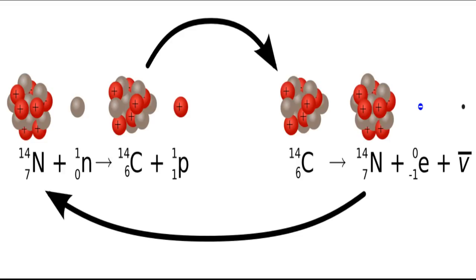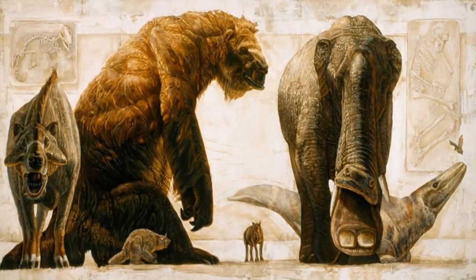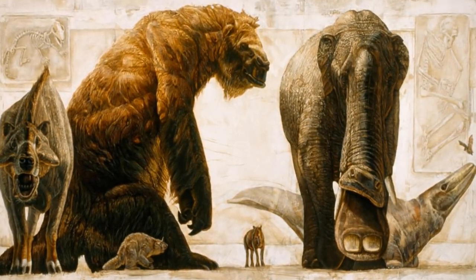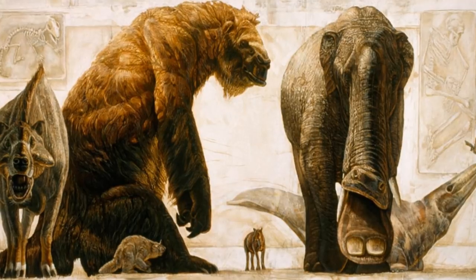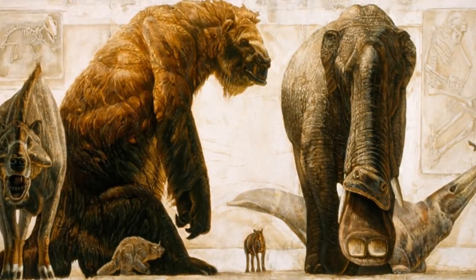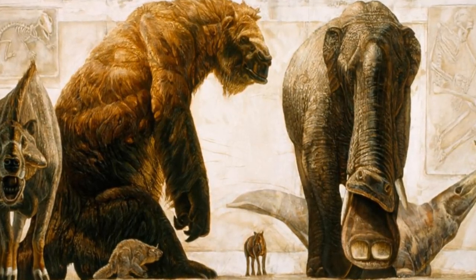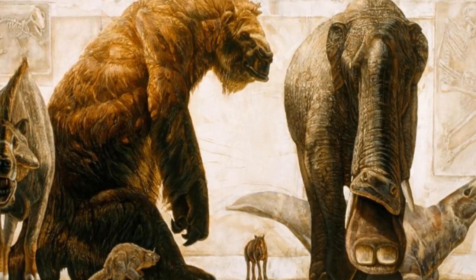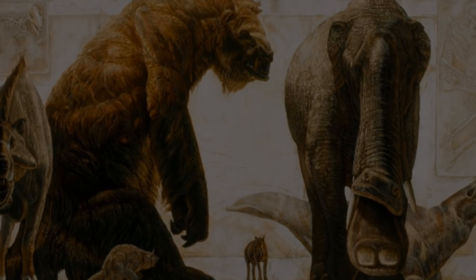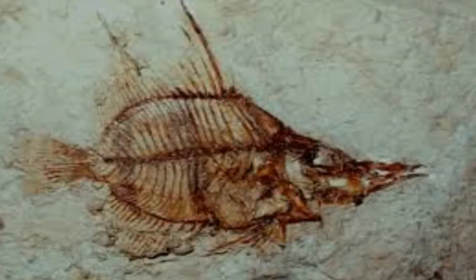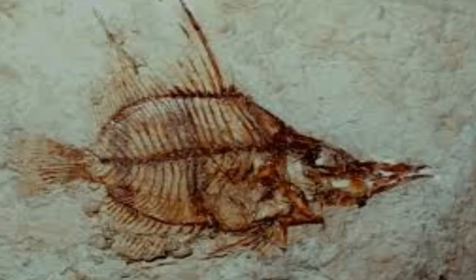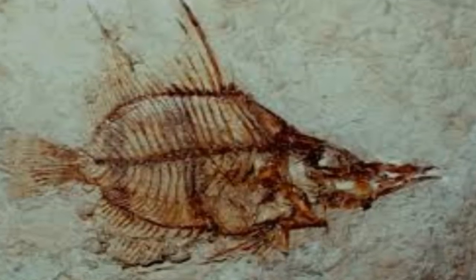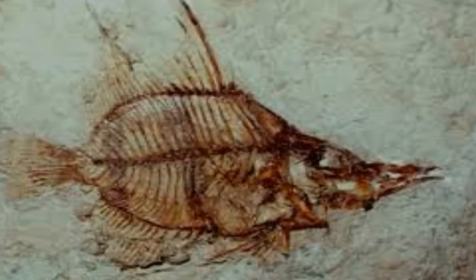The simplest means is to repeat the analytical measurements in order to check for laboratory errors. Another method is to make age measurements on several samples from the same rock unit. This technique helps identify post-formation geologic disturbances, because different minerals respond differently to heating and chemical changes. The isochron techniques are partly based on this principle.